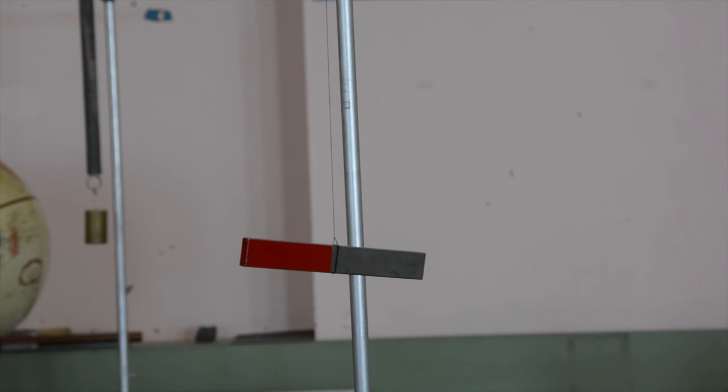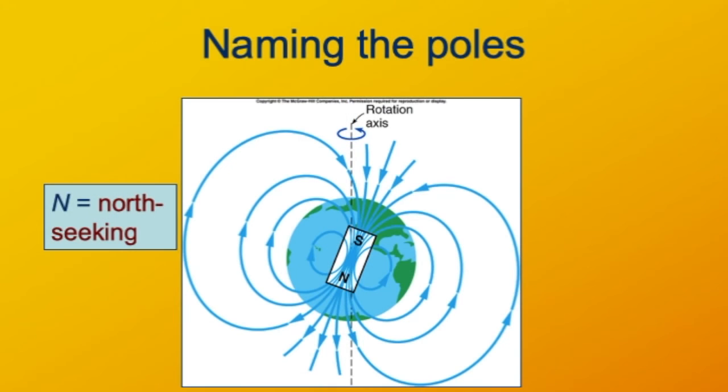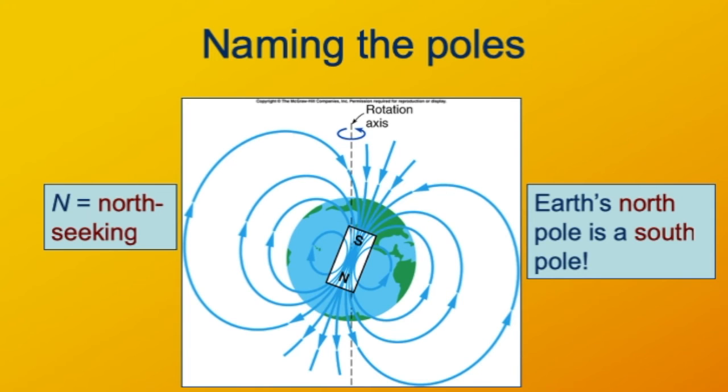So the magnet is eventually pointing north. We know that opposite poles attract and like poles repel, so the north pole of the earth must be magnetically a south pole because it's attracting the north poles of magnets.